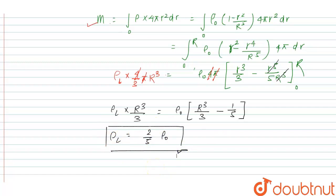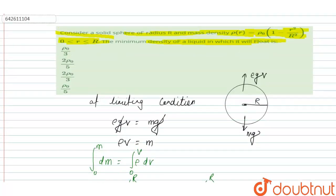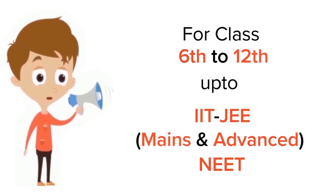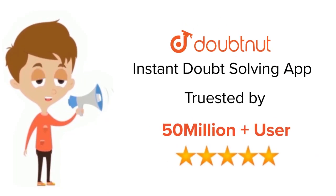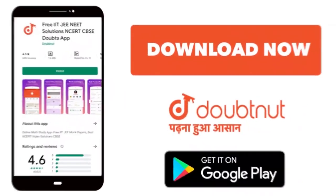When we see the options, option B, 2ρ₀/5, is the right answer. Thank you. For class 6 to 12, IIT-JEE and NEET level, trusted by more than 5 crore students, download Doubtnet app today.